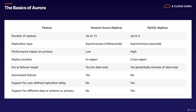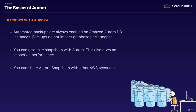A good thing about MySQL is you get support for user-defined replication delays, so you may want to have a replication delay of five or ten minutes to another region, whereas Aurora is instantaneous — you can't put in a five or ten minute window for a replication delay just yet, though they might add that as a feature going forward. Also, there's support for different data types, schemas, or primaries with MySQL. Amazon Aurora does not support different data types or schemas versus the primary database, whereas MySQL does.